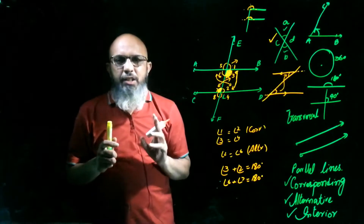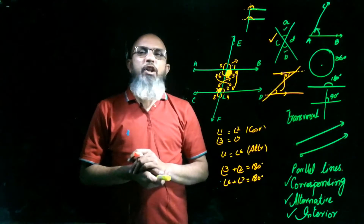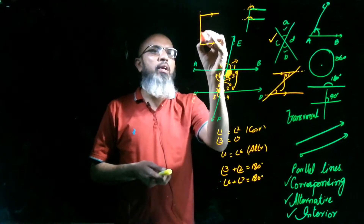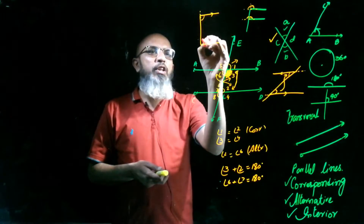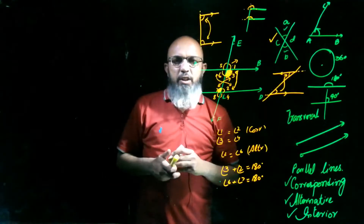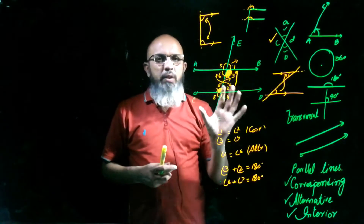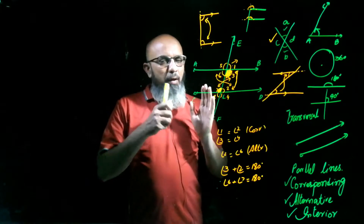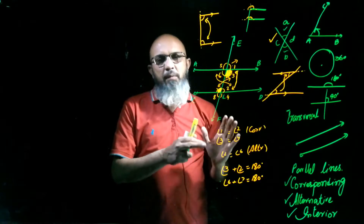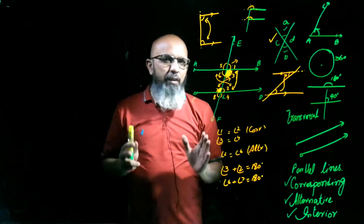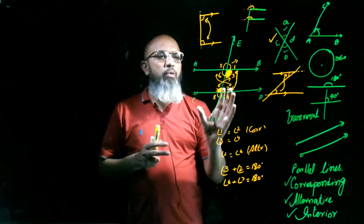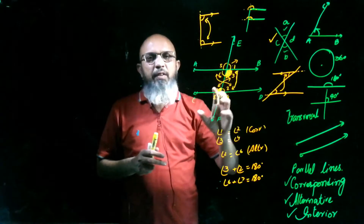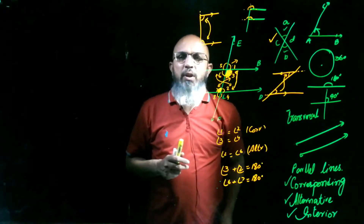Now the third one is interior angles. If I draw the letter C, these two lines are parallel and the curved part acts as your transversal. The angles formed are interior angles. So now it is clear what corresponding angles, alternate angles, vertical angles, and interior angles are. Keeping these four types and their definitions in mind, we will solve questions from your exercise — just knowledge of definitions, no long calculations.